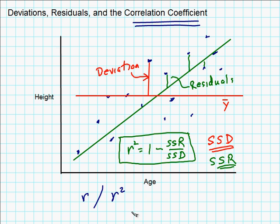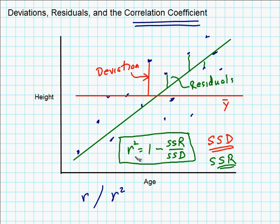We can then calculate: r squared is defined as 1 minus the sum of the squares of the residuals divided by the sum of the squares of the deviations. Then take the square root and that gives us r, the correlation coefficient. So we're basically asking: if we put a regression line through the data, is that going to be an improvement over just putting a horizontal line? If SSR is small compared to SSD, then 1 minus that tiny number would be close to 1, giving a high correlation. However, if SSR is hardly any different from SSD, then 1 minus 1 equals 0 — no correlation. This statistical measure tells us how clustered the data is near some kind of line.